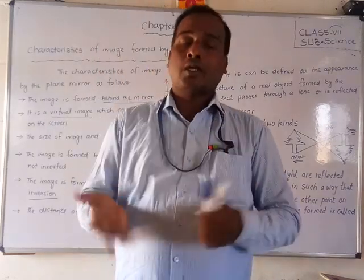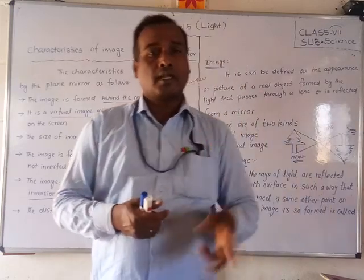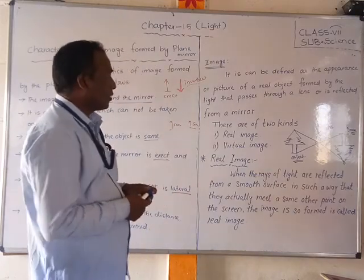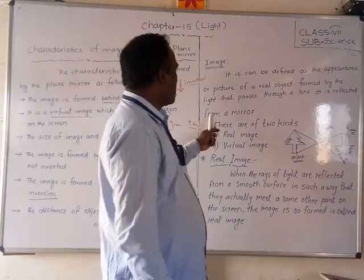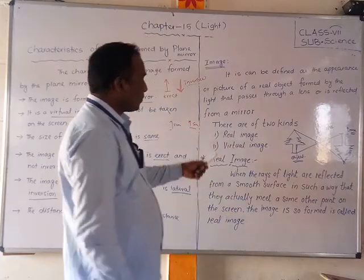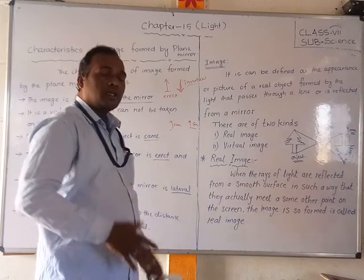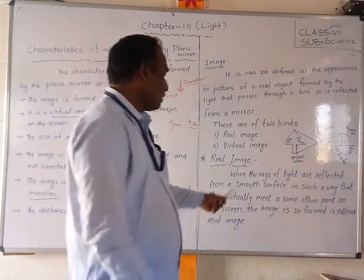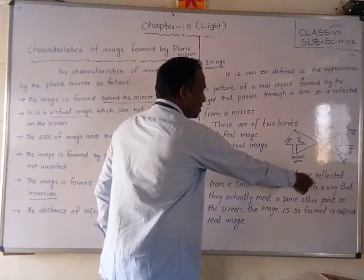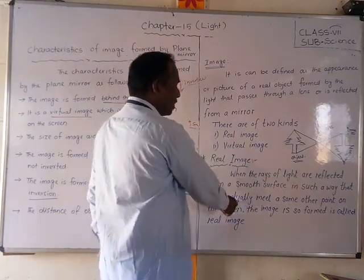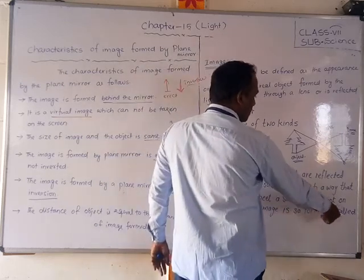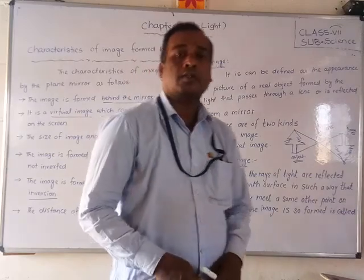There are generally two types of images: one is a real image and the other is a virtual image. First, let us understand what a real image is. When rays of light are reflected from a smooth surface in such a way that they actually meet at some point on a screen, the image formed is called a real image.